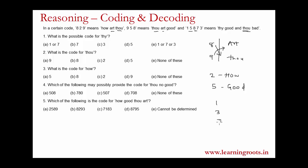So 1, 3, and 7 can stand for 'thy', 'and', or 'bad' — we do not know which stands for which. Now solving the questions: which of the following is a possible code for 'thy'? A possible code is 1, 3, or 7 — either of these can stand for 'thy'. So we mark that as the answer. What is the code for 'thou'? We know the code for thou is 8, so we mark 8 as the answer.